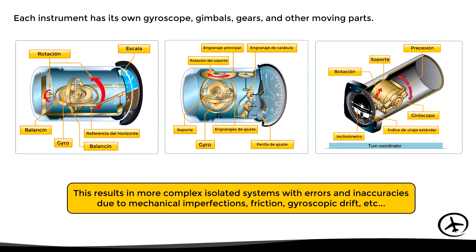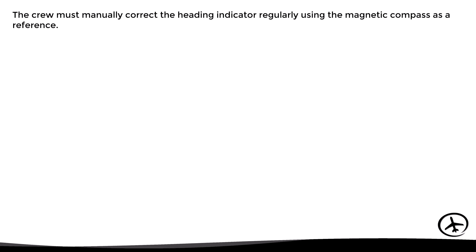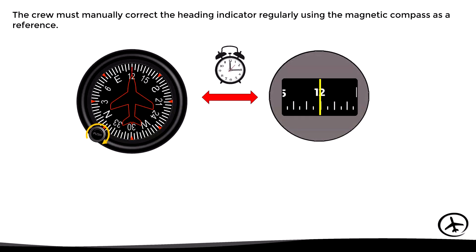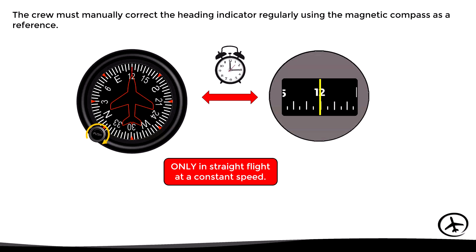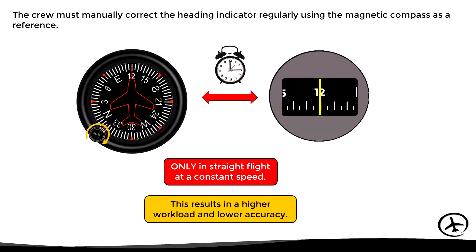In addition to this, in the case of the heading indicator, the crew must manually correct the indication using the magnetic compass as a reference. To do so, the aircraft must be flying in straight flight at constant speed, as these are the only conditions under which the compass gives a correct heading indication. All this results in higher workloads and lower accuracy.